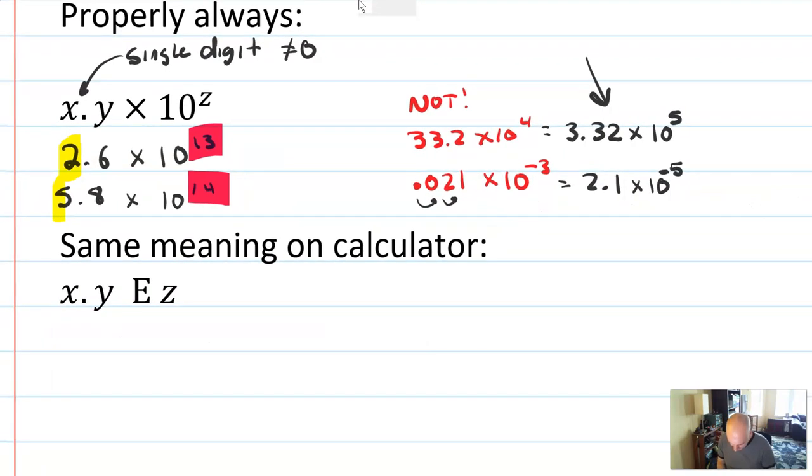This both would better be written as these numbers right here. And by the way, this has the same meaning on your calculator. Your calculator doesn't do times 10 to the blah. It does E instead. Let me see if I can show you this.